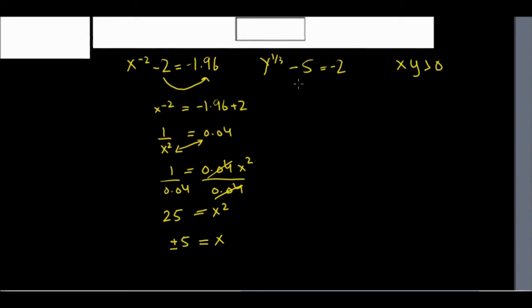Now, come to the second equation. Let's do the same here. Take the negative 5 to the other side and become positive 5. I'll have negative 2 plus 5. I'll get a 3. And I have y raised to 1 third.